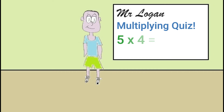Here's an example on the board: we have 5 times 4. This means we want to repeatedly add 5 to itself 4 times, so we'll go 5, 10, 15, 20 — and there's our answer. 5 times 4 equals 20. Does that make sense? Excellent!